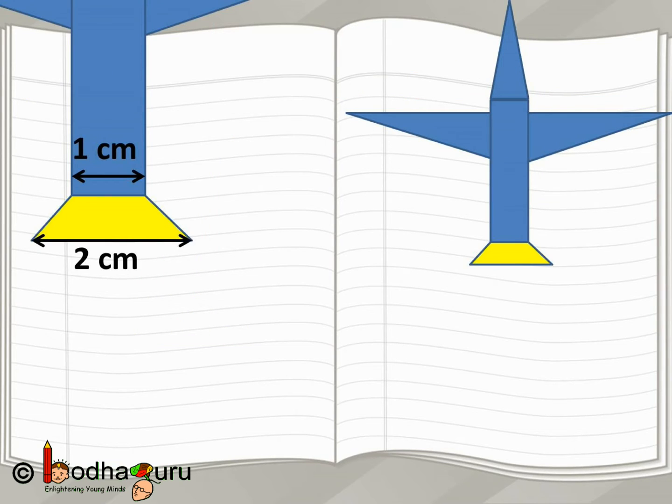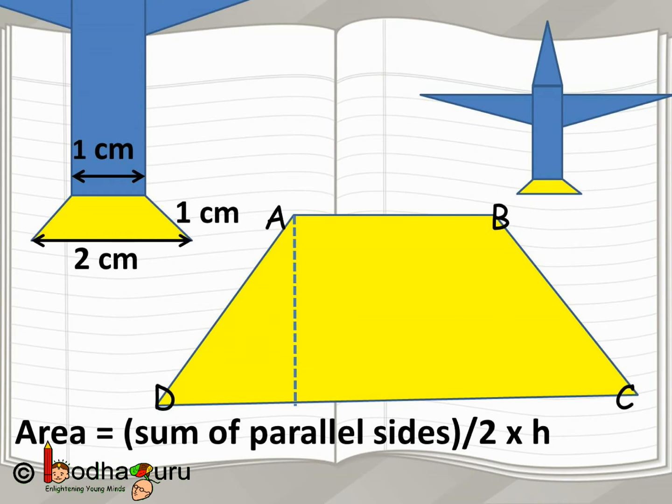Now, finally coming to the tail part. If you observe which type of quadrilateral it is, it is a trapezium because it has only two sides which are parallel, the other two are not. We already know the area of trapezium. It is equal to half of the sum of the two parallel sides multiplied by height or the perpendicular.